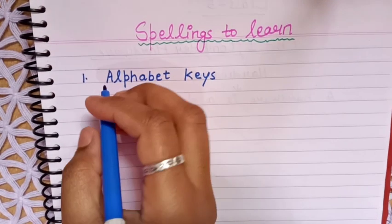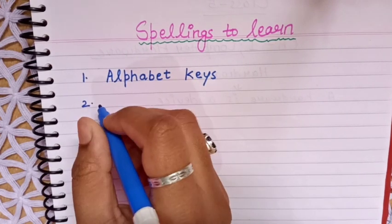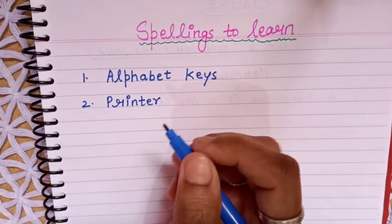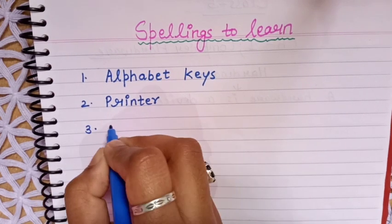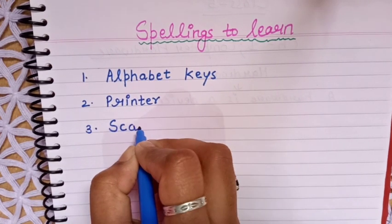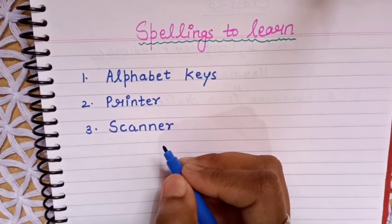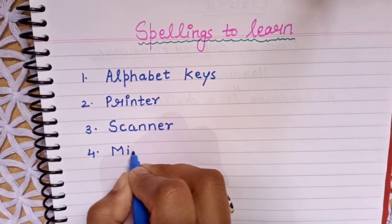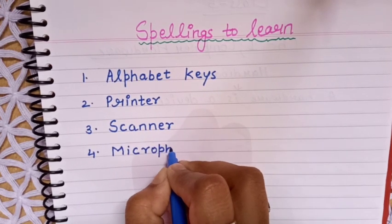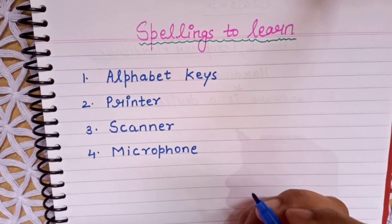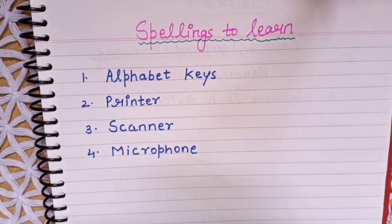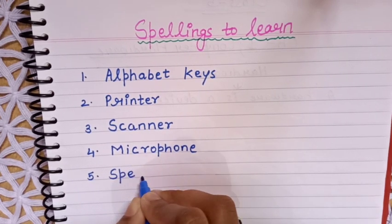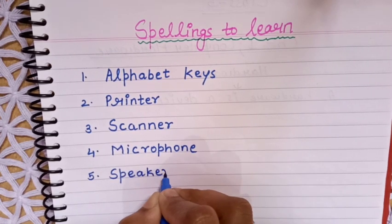Second spelling is Printer: P-R-I-N-T-E-R. Next is Scanner: S-C-A-N-N-E-R. Next is Microphone: M-I-C-R-O-P-H-O-N-E. Then Speaker: S-P-E-A-K-E-R.